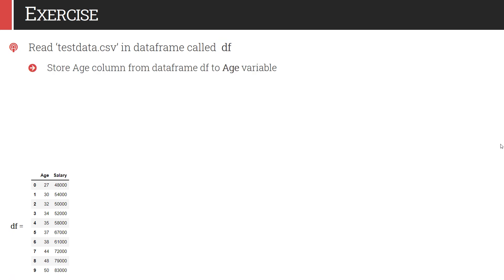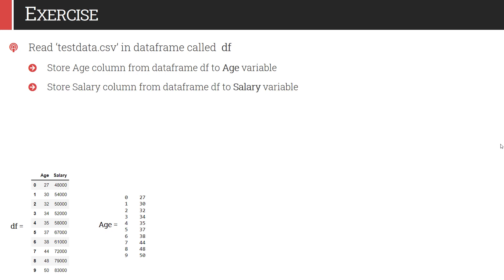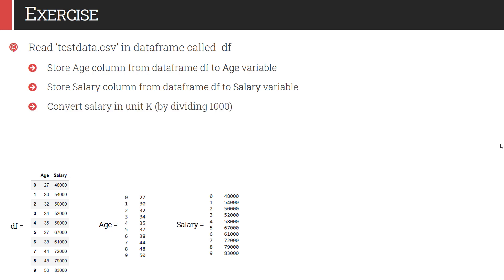First, you have to store the column age into the age variable. As it is one-dimensional, it will be converted from a data frame to a series. Next, you have to store the salary column of the data frame df into a variable called salary. This salary amount is in rupees — you have to convert it by dividing the salary by 1000, so it will be in 1000 units.